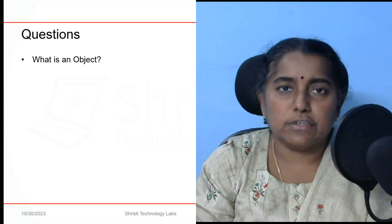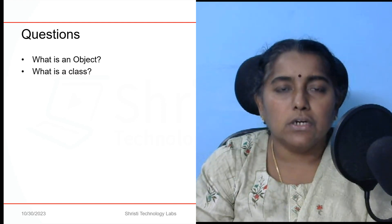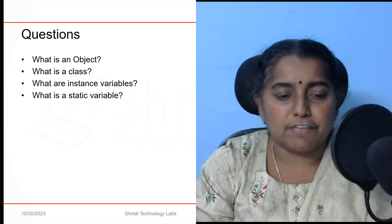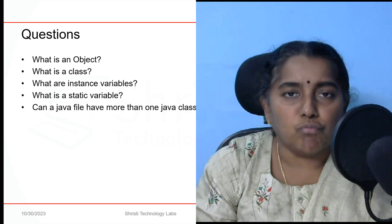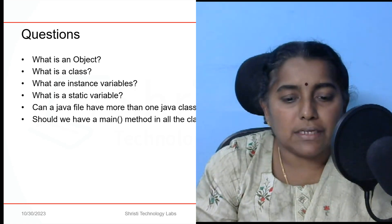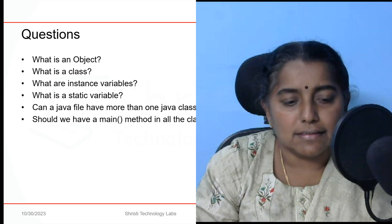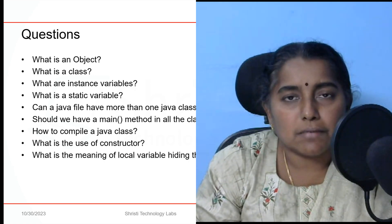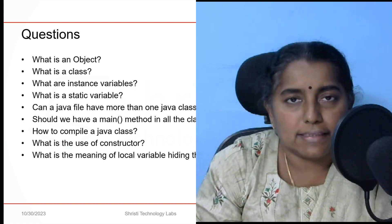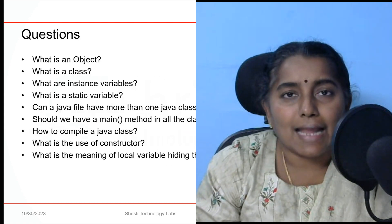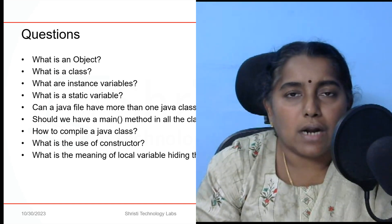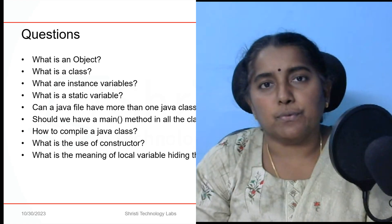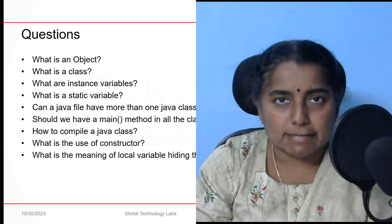These are a few questions which we are going to discuss: What is an object? What is a class? What are instance variables? What is a static variable? Can a Java file have more than one class? Should we have a main method in all the classes? How to compile a Java class? What is the use of a constructor? What is the meaning of a local variable hiding the instance variable? Can a class have more than one constructor? What will happen if we give our own constructor?